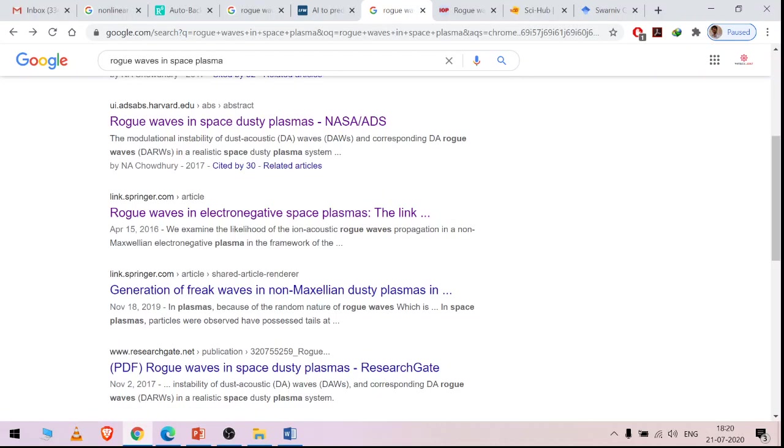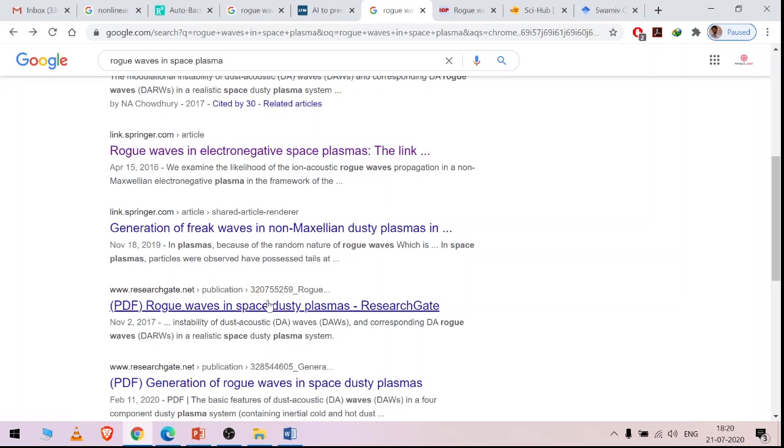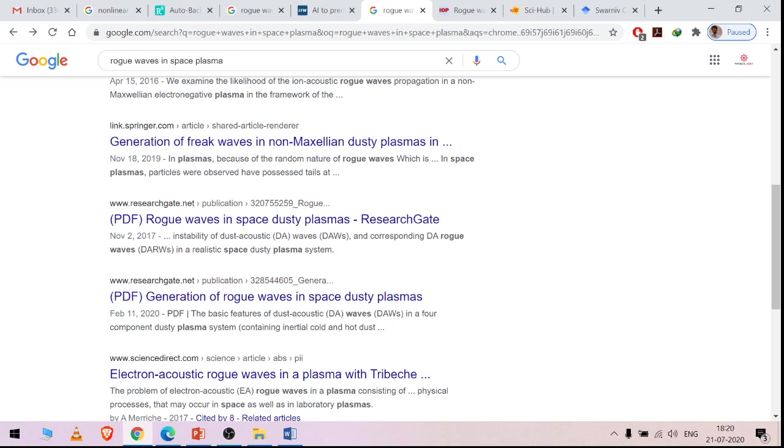And non-Maxwellian—as I have said, those kappa and non-thermal distributions, you can also check those things. Rogue waves in space dusty plasma, generation of rogue waves in space dusty plasma. You can always get these articles on rogue waves. Thank you.